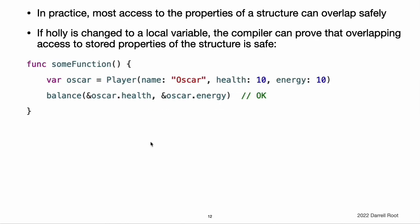This code shows that the same error appears for overlapping write accesses to the properties of a structure stored in a global variable. In practice, most access to the properties of a structure can overlap safely. For example, if the variable holly in the example above is changed to a local variable instead of a global variable, the compiler can prove that overlapping access to stored properties of the structure is safe. In this example, Oscar's health and energy are passed as two in-out parameters to balance, and the compiler can prove that memory safety is preserved because the two stored properties do not interact in any way.